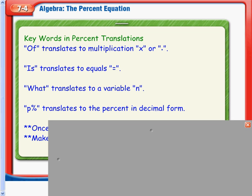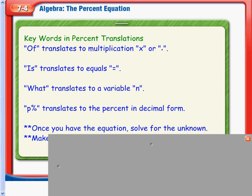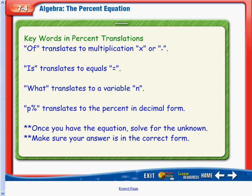And p% is something new for us, that we are translating to the percent, but in decimal form. So if they give us 25%, we are going to want to put that as 0.25.